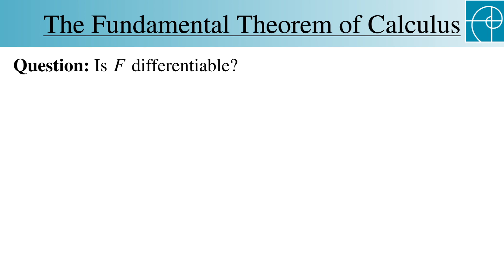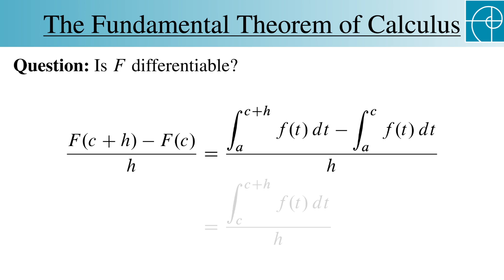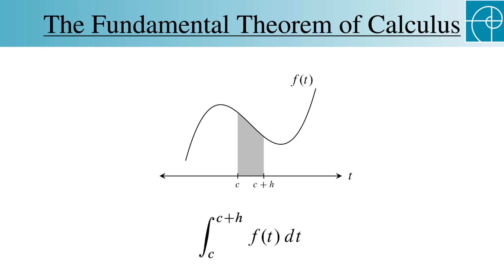Let's look at the difference quotient first and see what we can do with that. It's the difference of these two integrals, the integral from a to c plus h and the integral from a to c, both of f of t dt, all over h. We can simplify the numerator to the single integral from c to c plus h, which represents this area under little f.